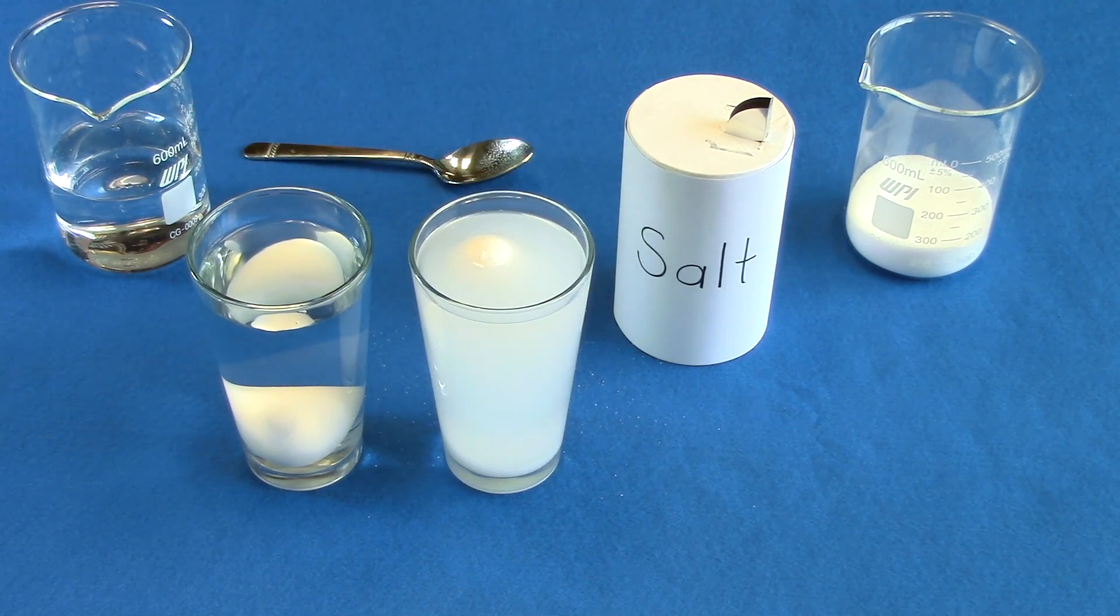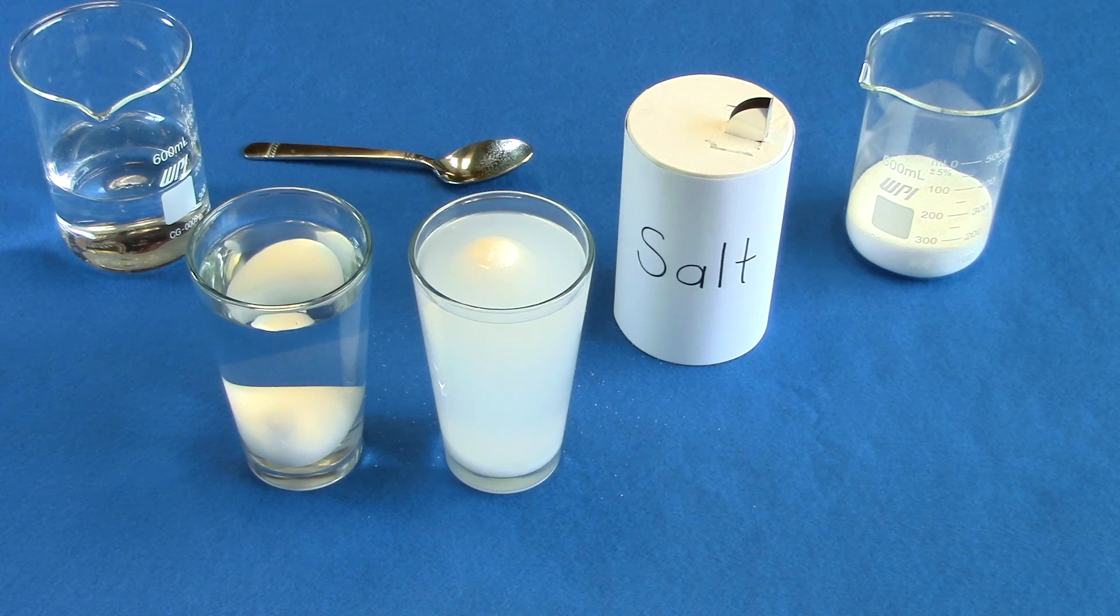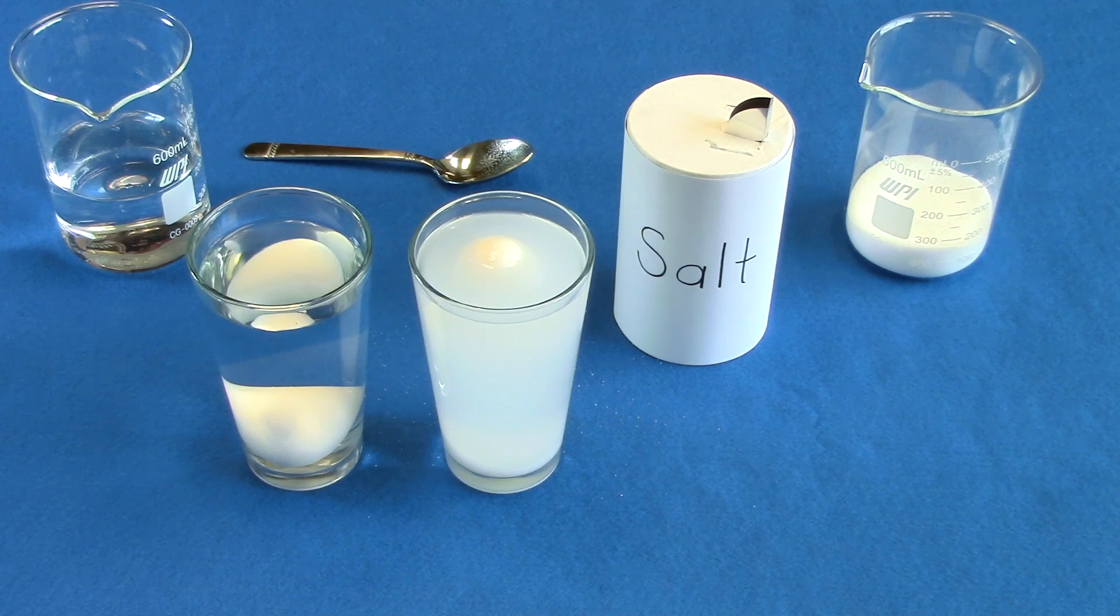It's all about density. Density has to do with the amount of matter contained in a specific space or volume. Because the egg is more dense than the water, the egg pushed away water particles so it could make space for itself, thus sinking.